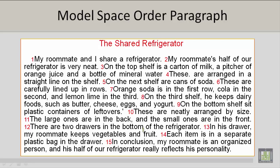There are two drawers in the bottom of the refrigerator. In his drawer, my roommate keeps vegetables and fruit. Each item is in a separate plastic bag in the drawer. In conclusion, my roommate is an organized person, and his half of our refrigerator really reflects his personality.